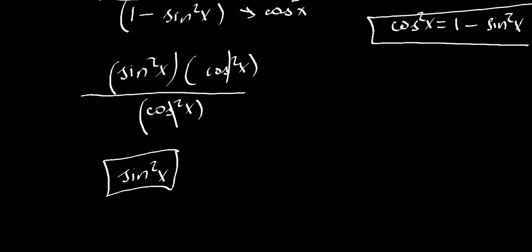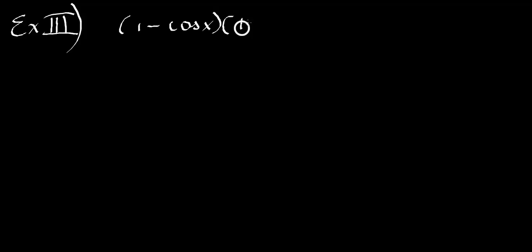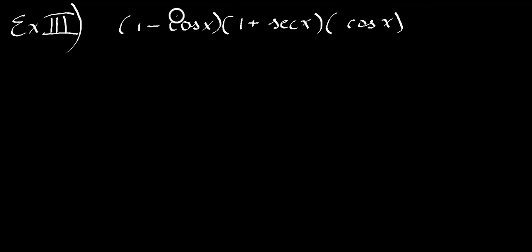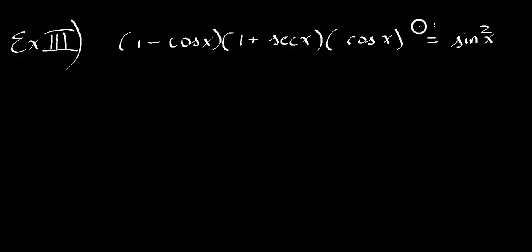Now let's do a little bit different one. We've got 1 minus cosine x, multiplied by 1 plus secant x, all multiplied by cosine x. Once we simplify this down, the answer is going to be sine x squared. You'll mostly see this format in problems where you have to make one side match the other side.